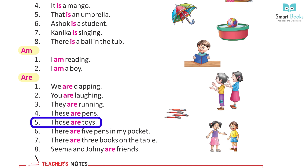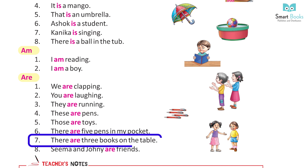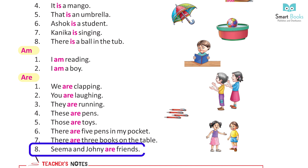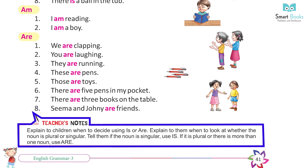Five: Those are toys. Six: There are five pens in my pocket. Seven: There are three books on the table. Eight: Seema and Johnny are friends.